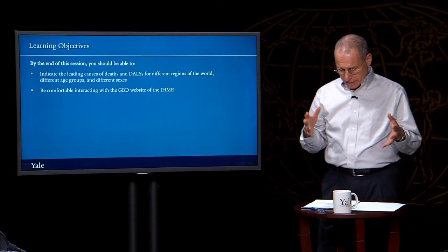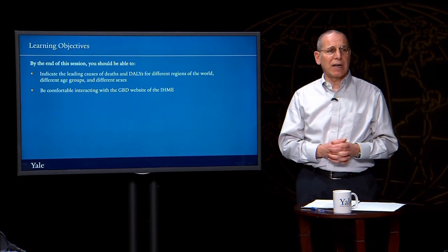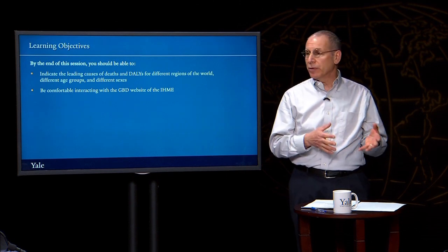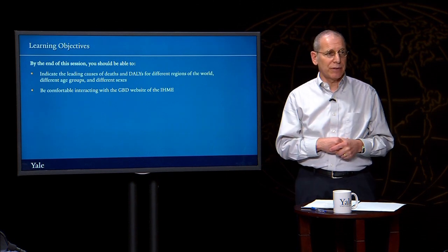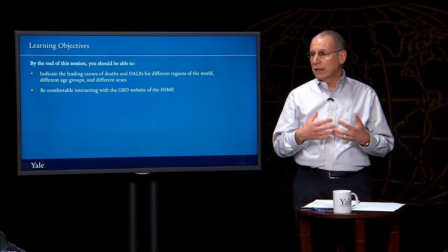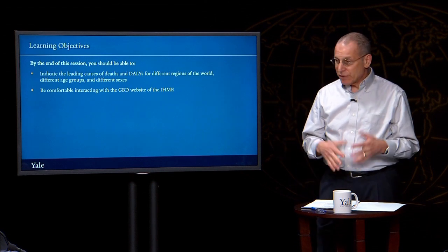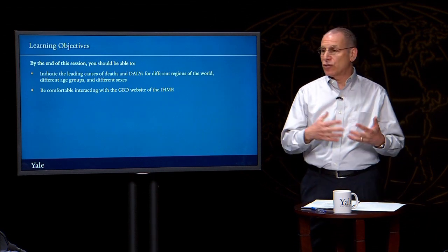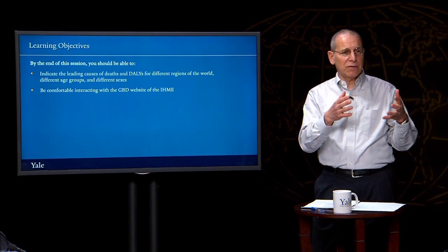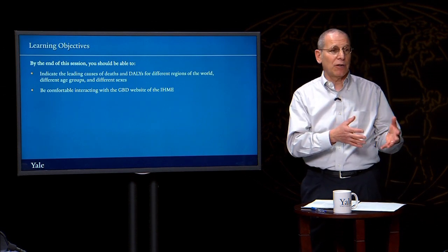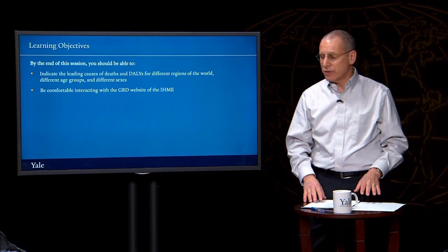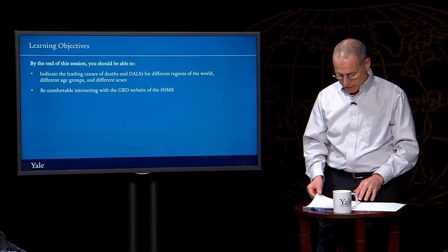Twenty years ago, the leading causes of death in most of today's low- and middle-income countries were communicable diseases like tuberculosis, diarrheal disease, lower respiratory infections, and HIV. Is this still the case? Has it changed? Why has it changed? And what is the extent to which the burden of disease in today's low- and middle-income countries looks increasingly like the burden of disease in today's high-income countries?